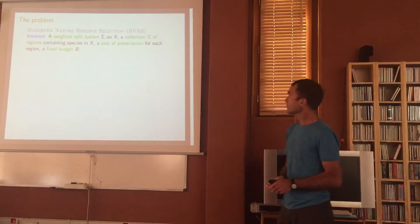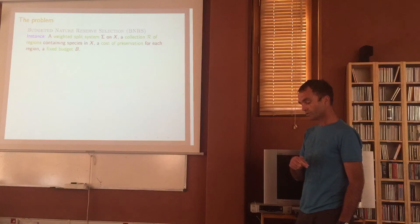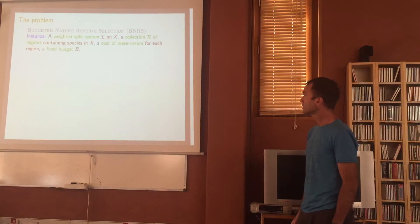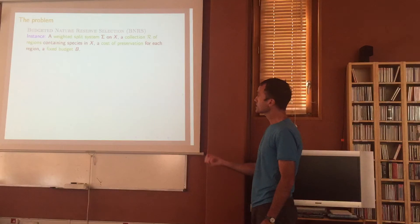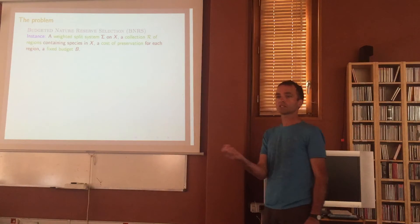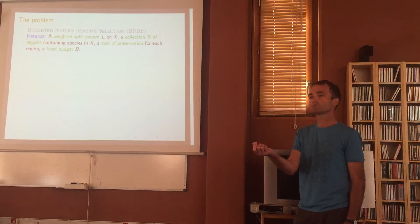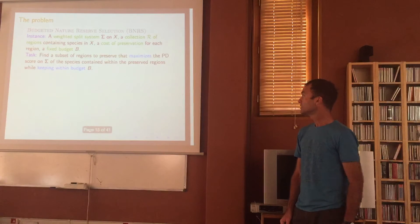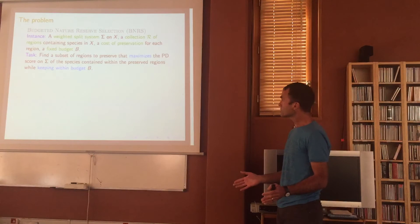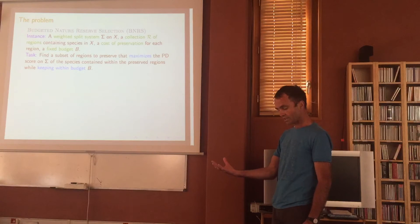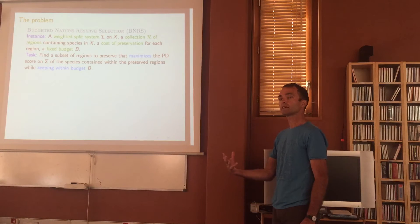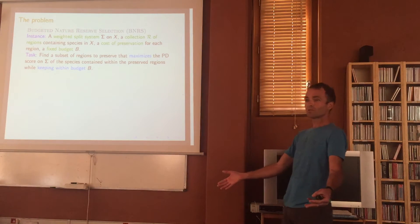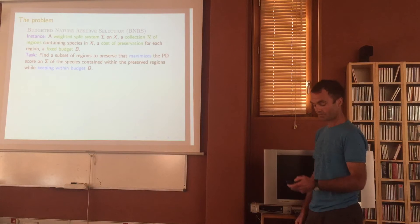So here's the problem — the unrooted version (we'll do a rooted version later). I've got a weighted split system on X, a collection of regions (subsets of X), a cost for each region, and a fixed budget B. I want to find the subset of regions to preserve that maximises the PD score of the species contained in those regions, while keeping within budget.